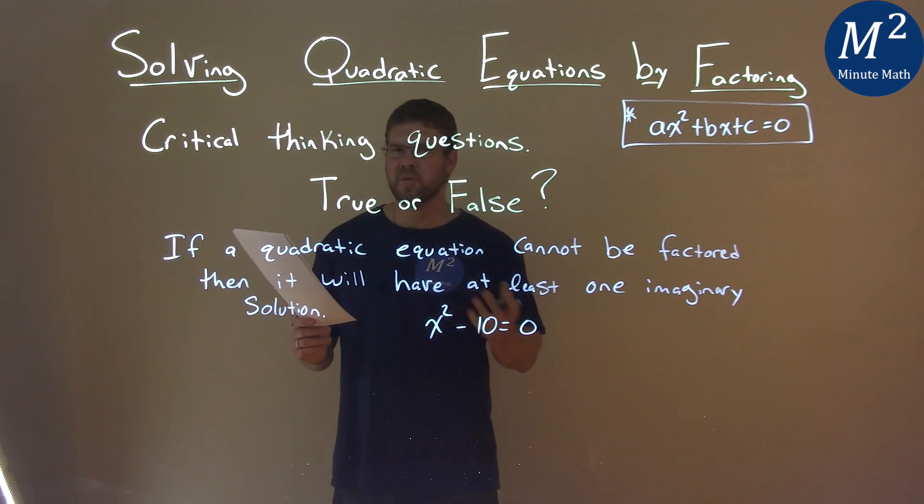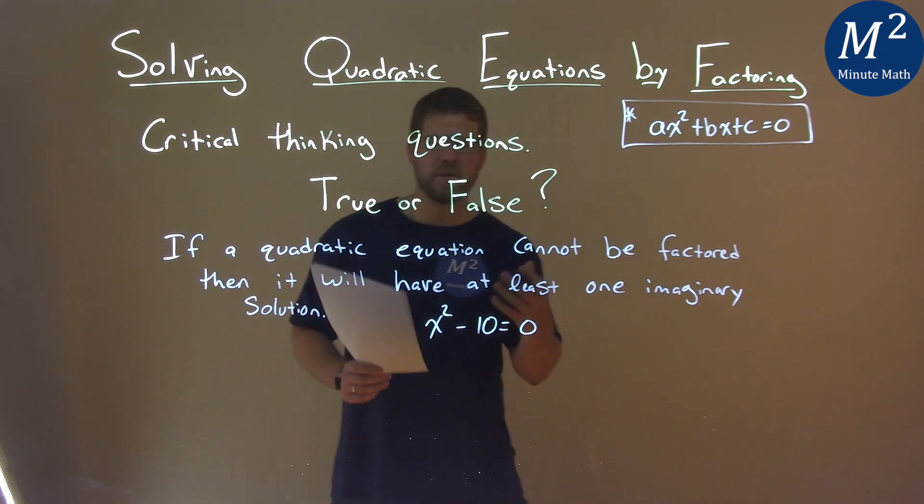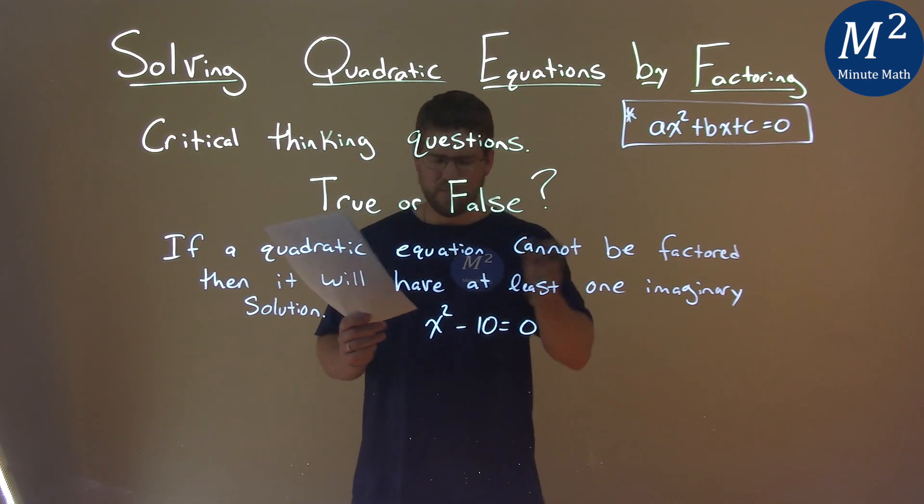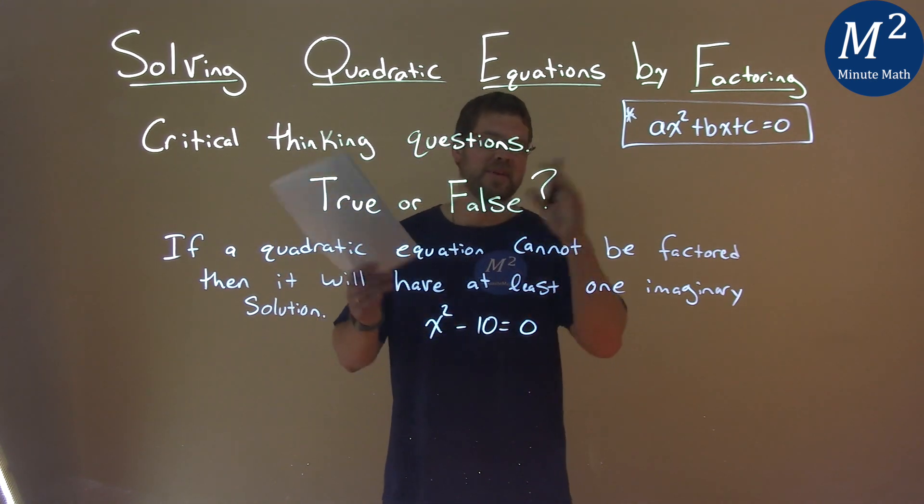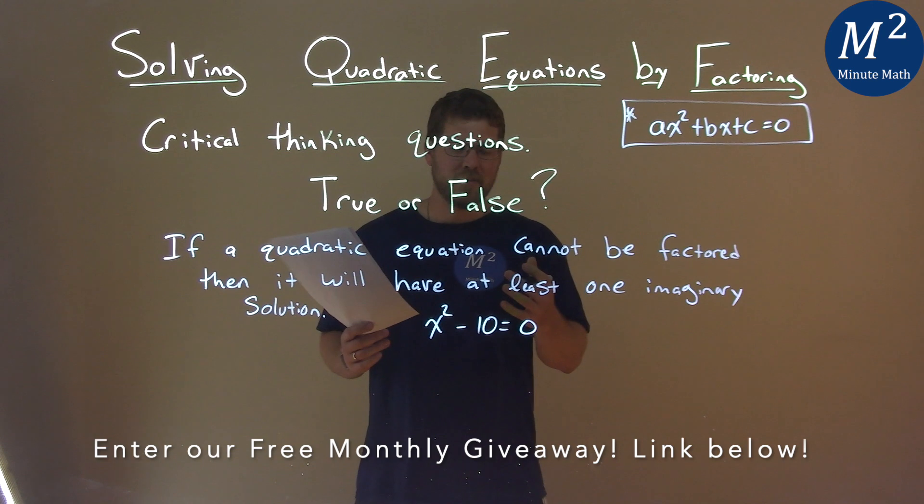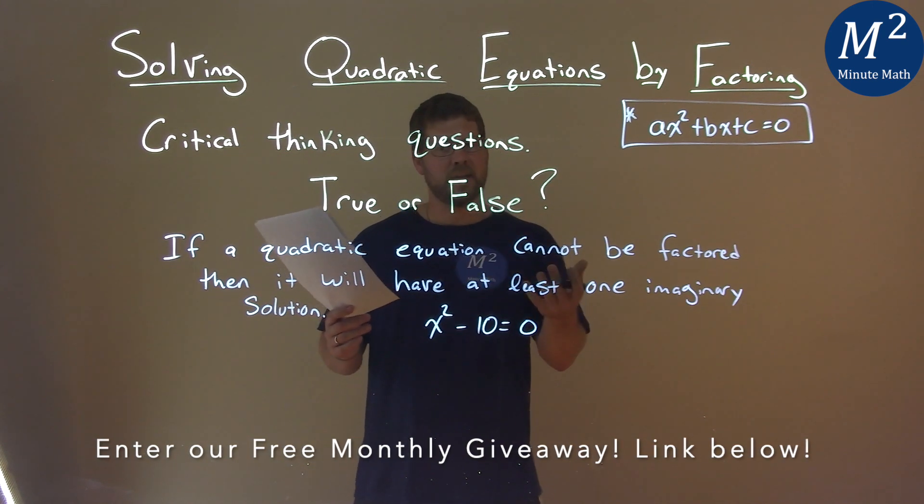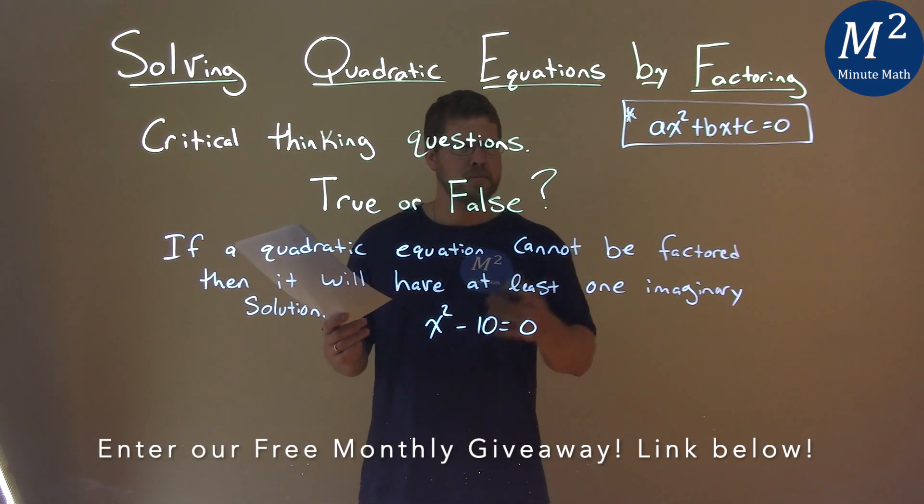Well, no. No two numbers multiply to be negative 10 with real solutions. Or, sorry, it'll have real solutions, but in factored form, nice and neat, no two numbers multiply to negative 10 but add to be 0.